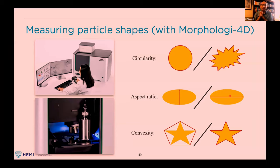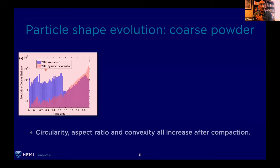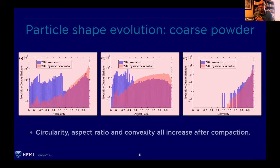Thinking about particle shapes: you can measure them with the Morphology 4ID instrument, developed for the pharmaceuticals industry. It spreads powder over a surface, takes pictures, does automated image segmentation, giving particle sizes and shapes — and even Raman spectroscopy for composition. You can measure circularity, aspect ratios, and convexity. Particle shape also changes after dynamic compaction. So lots of things are happening inside these systems. Here's an impact onto a PMMA cube using a polycarbonate cylinder at 3 kilometers per second. You can watch the damage, granular flow, ejector, crater formation — and actually see the shear and compression waves propagating inside the system and their reflections.